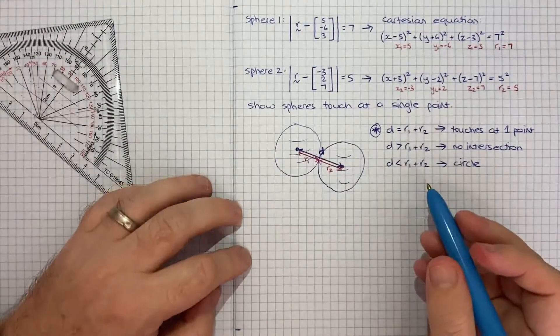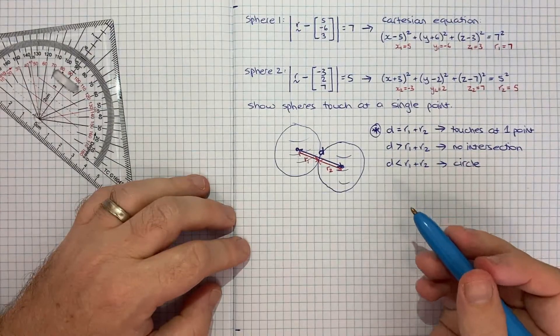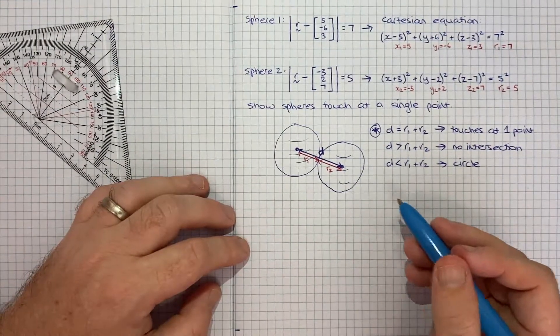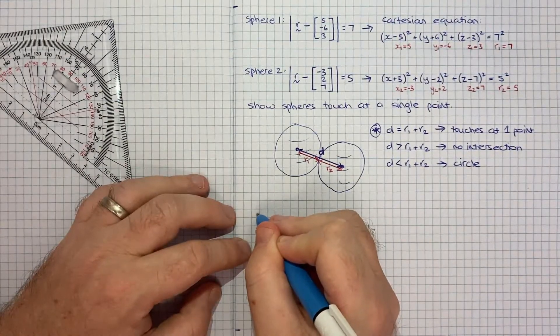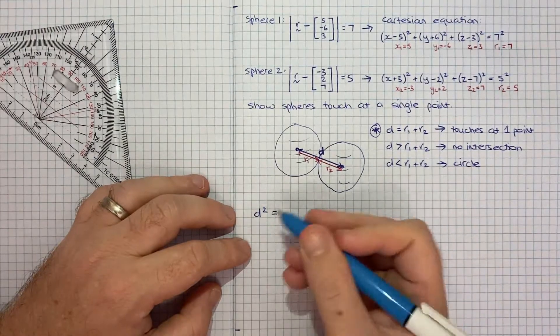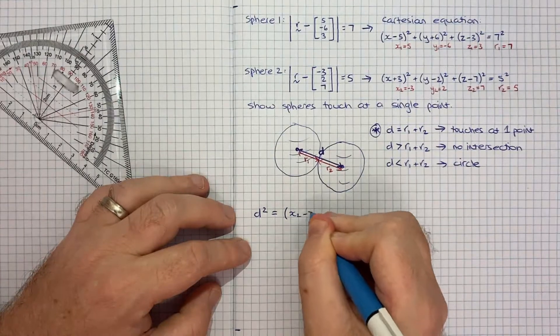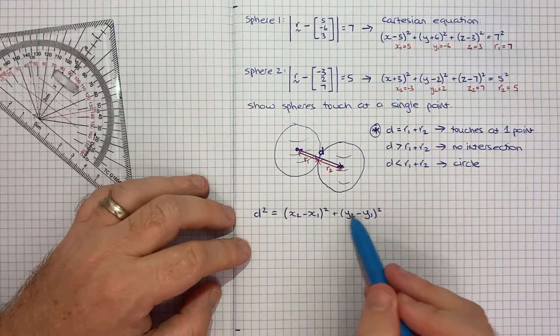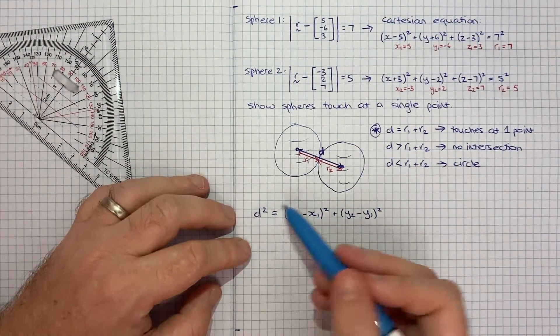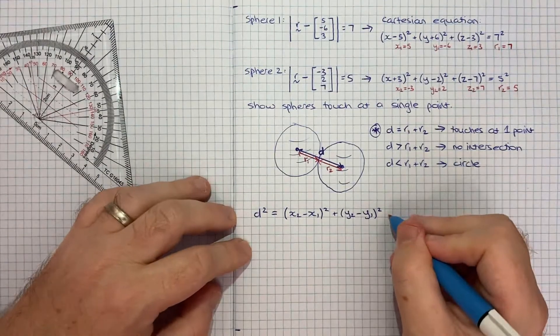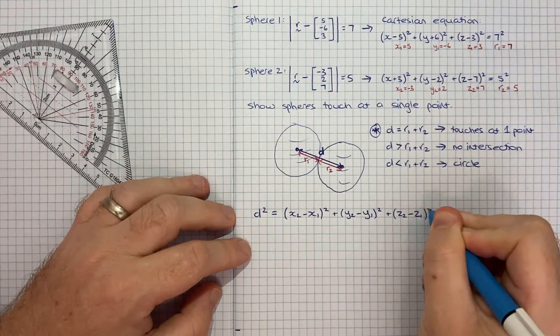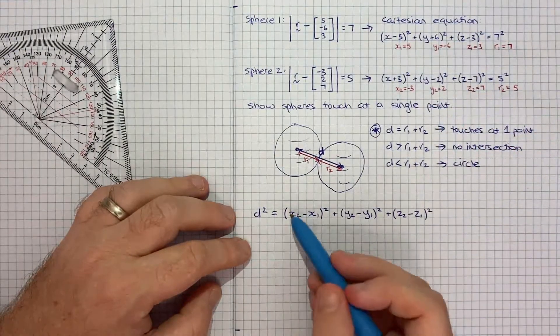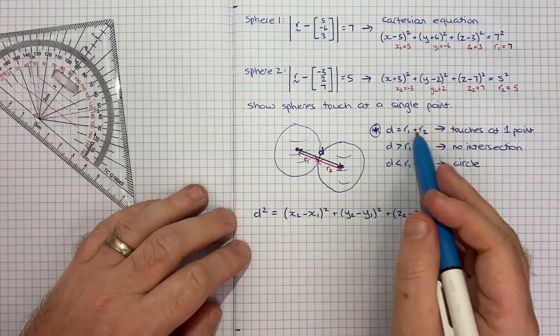If we can show that this distance equals the sum of these two radiuses, that's how we show they touched at a single point. The question is, how do we calculate the distance? This is not a formula expressly laid out in the Cambridge textbook, but it's probably worth knowing. The distance d² equals (x₂ - x₁)² + (y₂ - y₁)² + (z₂ - z₁)². You take the difference of coordinates in each axis, square them and add them up. Now we just add on the third axis.